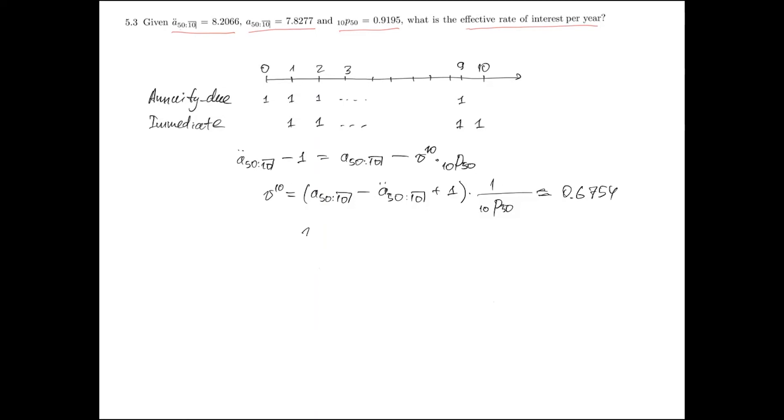From which the discount factor for one period is about 0.9615 and knowing that V is equal to 1 over 1 plus i we can obtain that the effective rate of interest per year is about 4.0014 percent.